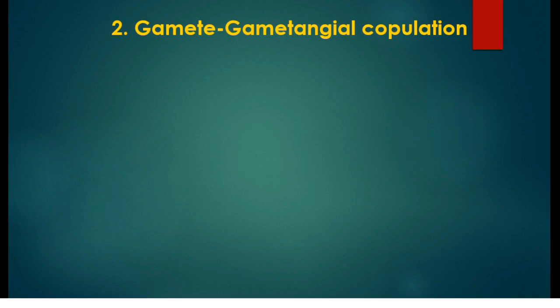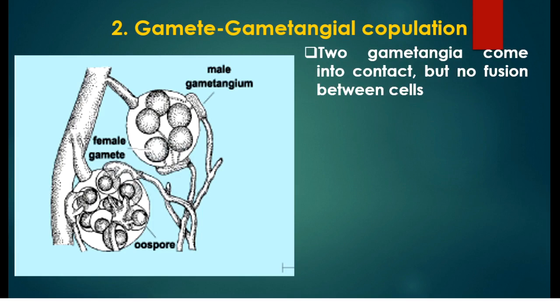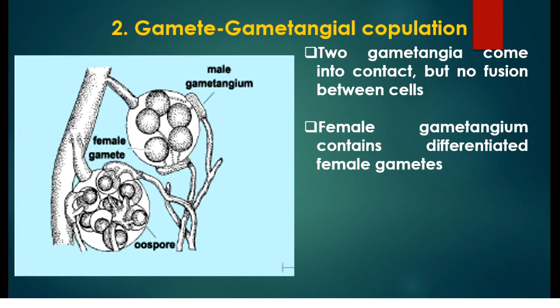The second method is gametangial contact. In this case, either the male or female produces well-differentiated sex cells called gametes, and the other has gametangia instead of well-defined sex cells. Two gametangia come into contact but there is no fusion between the cells. In most cases, the female gametangium differentiates into well-defined gametes — it is a large ball-like structure containing many differentiated female gametes.